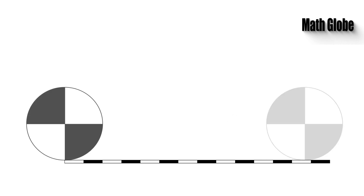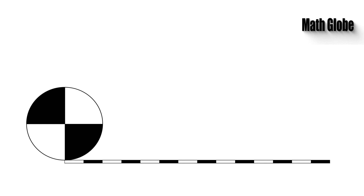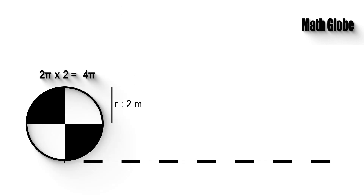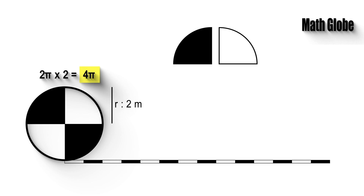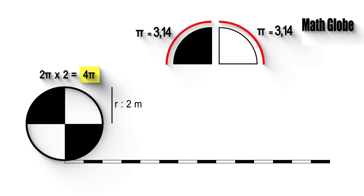Since the wheel has radius 2 meters, its circumference is 2π × 2 = 4π meters. Likewise, the wheel is divided into 4 quarters, so the portion of the circumference taken by each quarter is π meters.